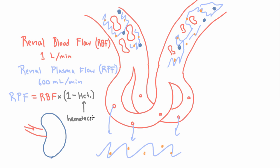Hematocrit is the percent of blood volume that's filled by red blood cells, usually about 40% to 45%. So if hematocrit is the percent of blood volume filled with red blood cells, then 1 minus hematocrit is the percent of blood that's filled with plasma, that's not filled with red blood cells.